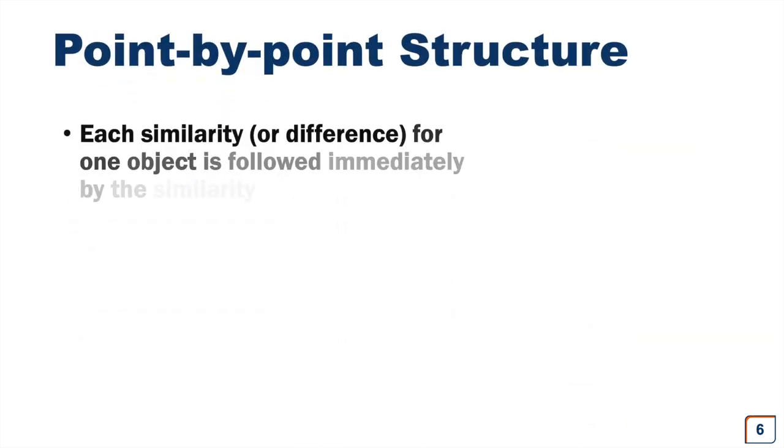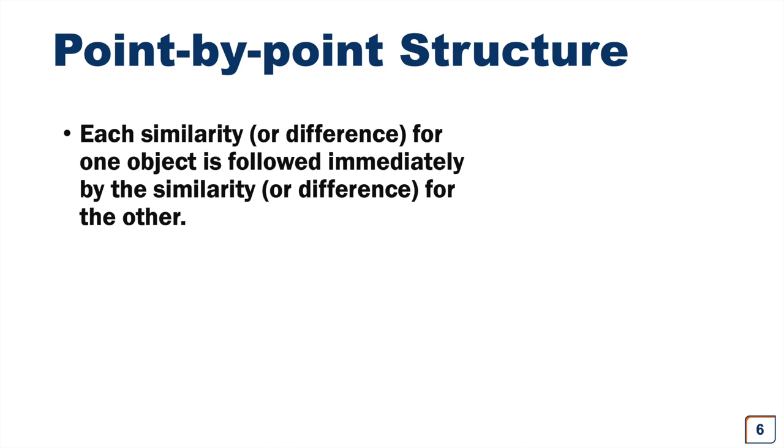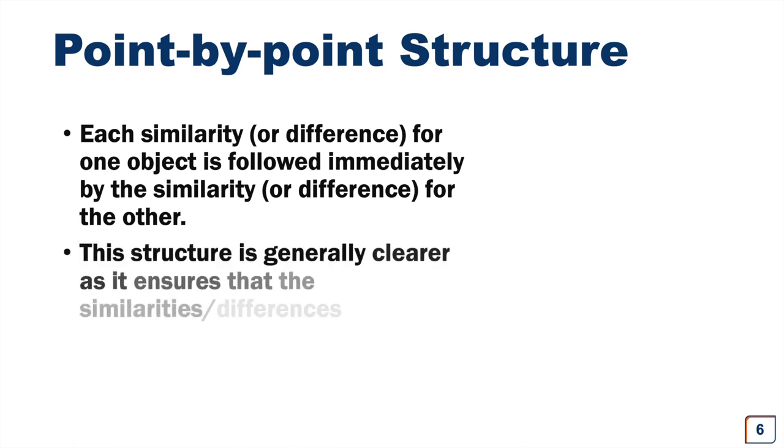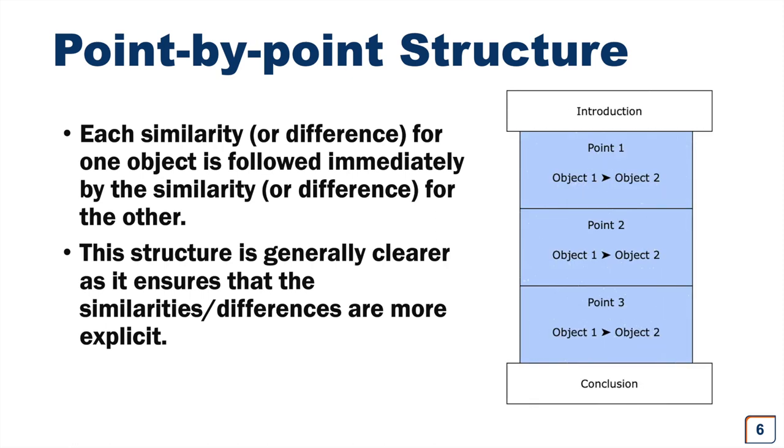Instead, if you want to write a point-by-point structure, each similarity or difference for one object is followed immediately by the similarity or difference for the other. This structure is generally clearer, as it ensures that the similarities or differences are more explicit.